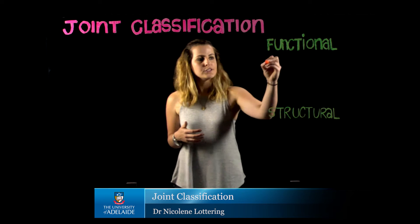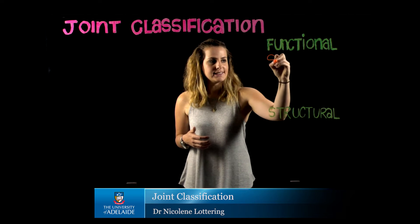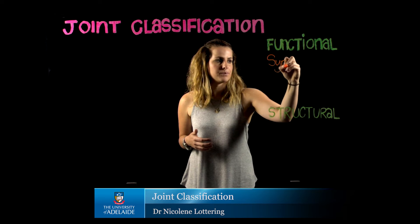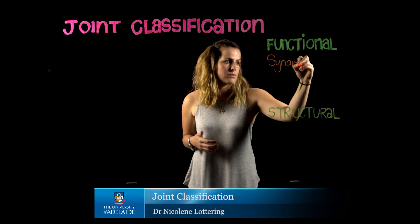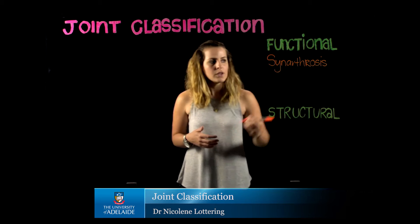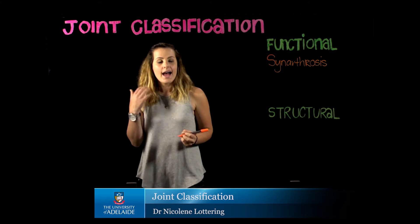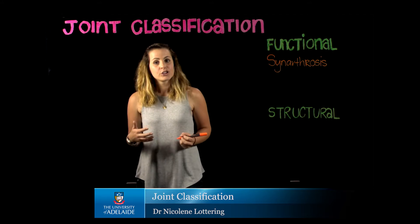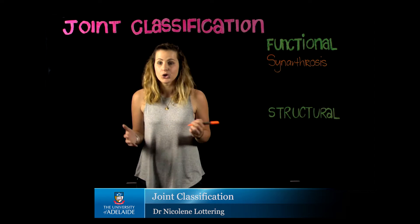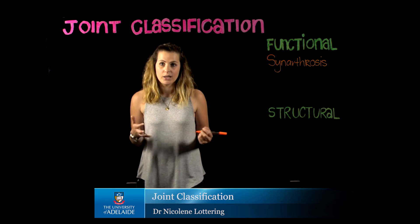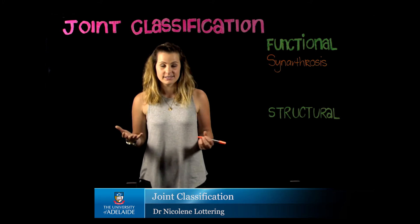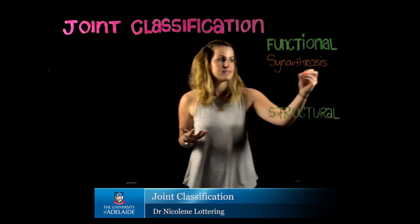The first type of joint is a synarthrotic joint. Our synarthrotic joints are those that don't enable any movement — such as sutures in the skull, for instance.